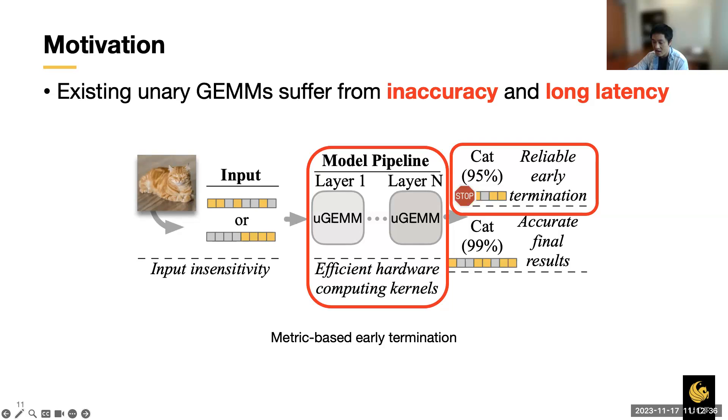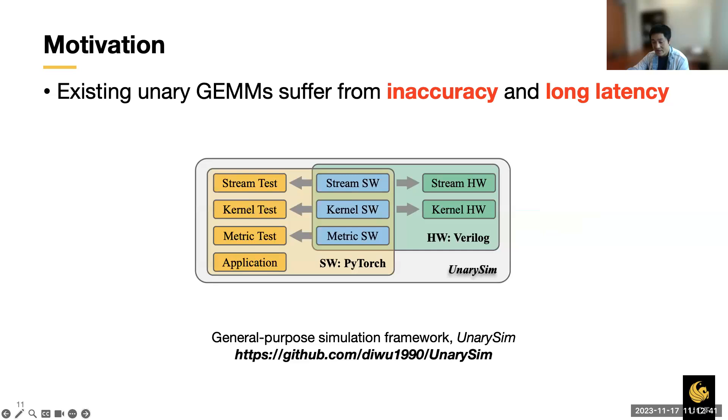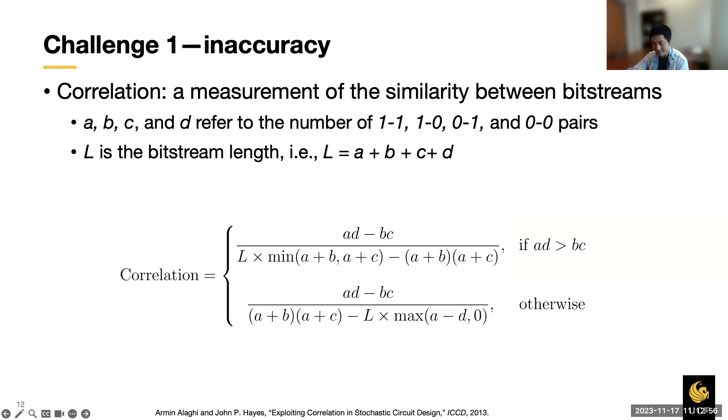All those features together enable dynamic energy accuracy scaling on resource constrained systems. Moreover, to lower the barrier to entry, a general purpose simulation framework for unary computing, UnarySim, is made publicly available. The UGEM sets up a foundation of my follow-up unary computing research. Now let's talk about the first inaccuracy challenge.